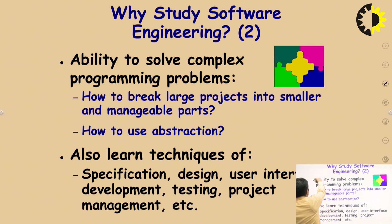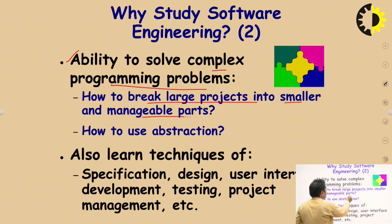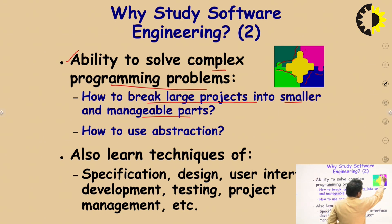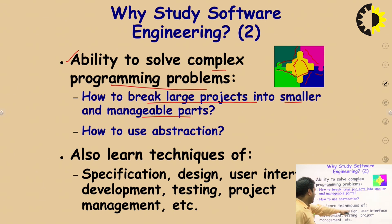The second reason to study software engineering is to develop the ability to solve complex programming problems. When you have a complex problem, you solve it by dividing large projects into small parts and combining results together using algorithmic design techniques. You also learn techniques for specification, design, user interface, development, testing, project management, and more.